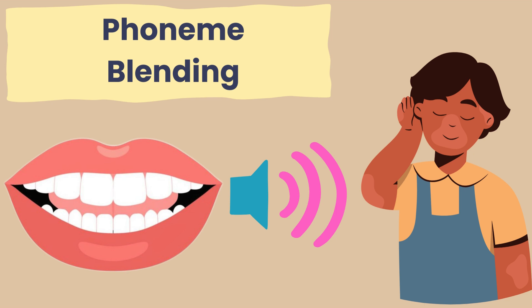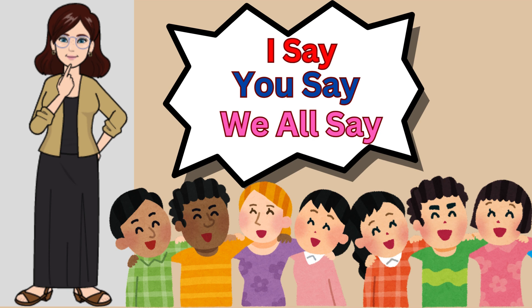Phoneme blending. I will say the phonemes in a word. You will repeat the phonemes back to me. Then we will say the phonemes together and blend the phonemes and say the word together. Example: I say r, a, n. You say r, a, n. We say r, a, n. What word? Ran. I say bad. You say. We say bad. What word? Bad.